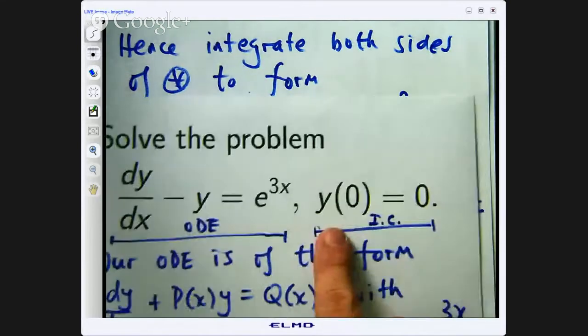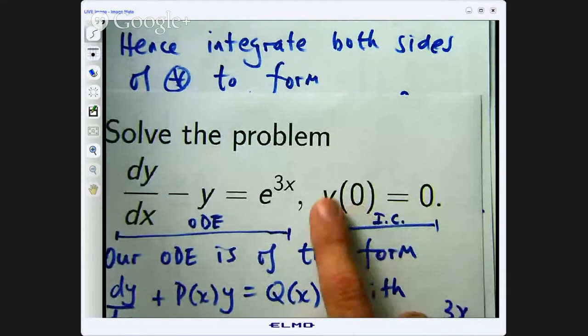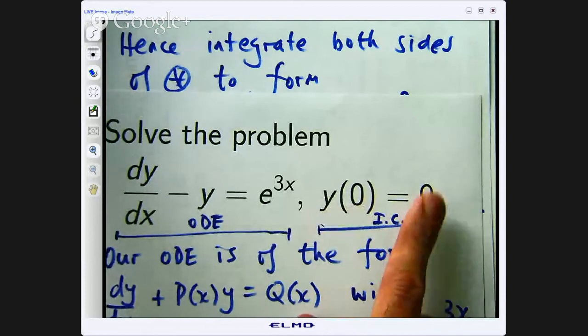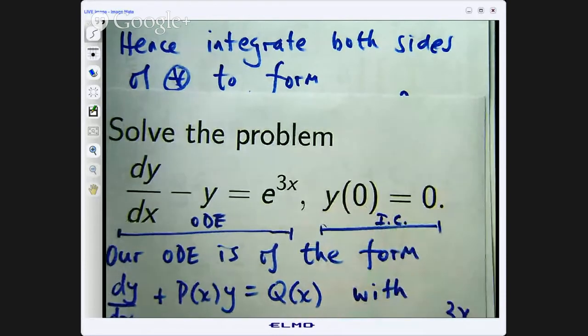So what this initial condition says is that when x equals 0, our function y should also equal 0. So let us get a value for that c using the initial condition.